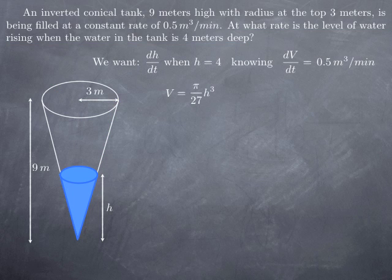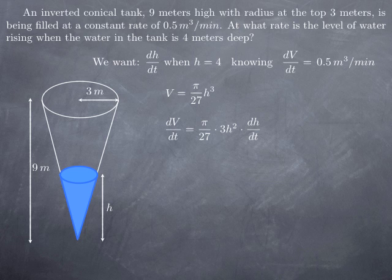So now we want dh over dt knowing dV over dt and the fact that V can be expressed as π over 27 h cubed. We differentiate both sides with respect to time because V and h are both functions of time in order to obtain an equation relating the two rates of change. We obtain that dV over dt is π over 27 multiplied by the derivative of h cubed which is the derivative of the cube of a function. So we use the chain rule and obtain 3h squared dh over dt.